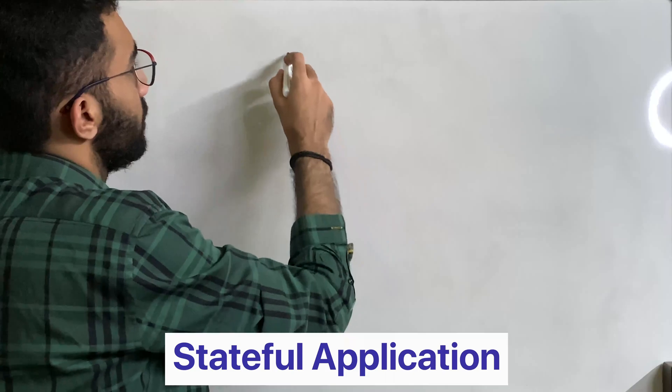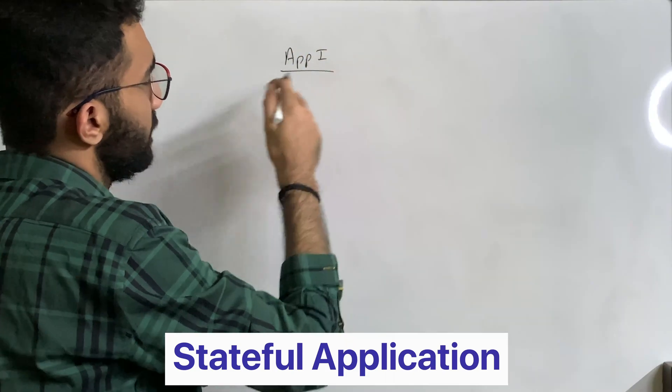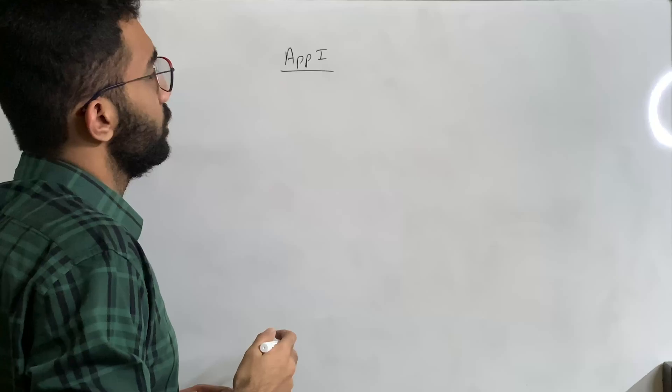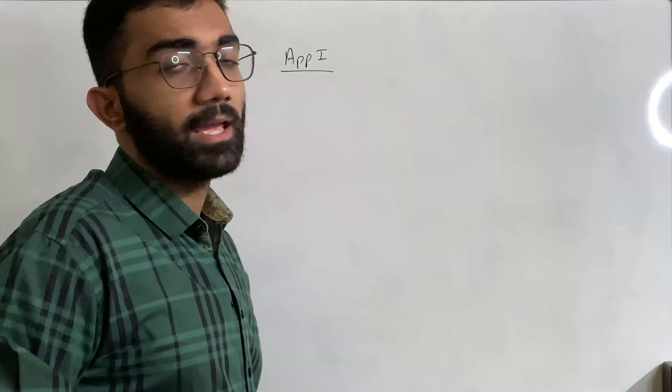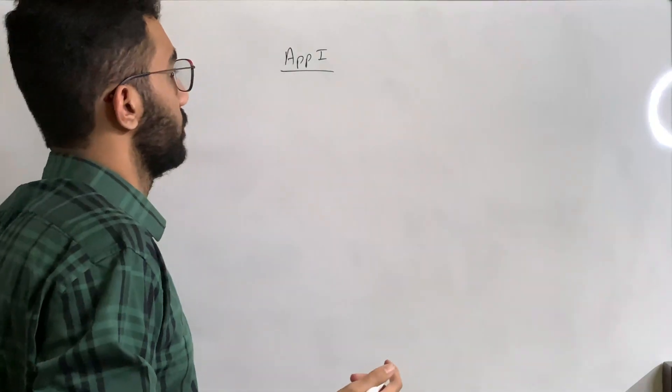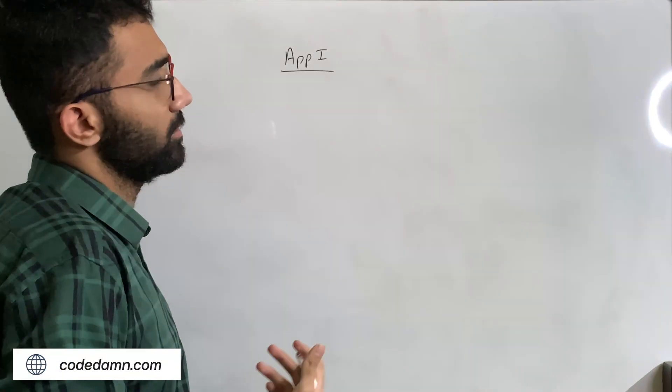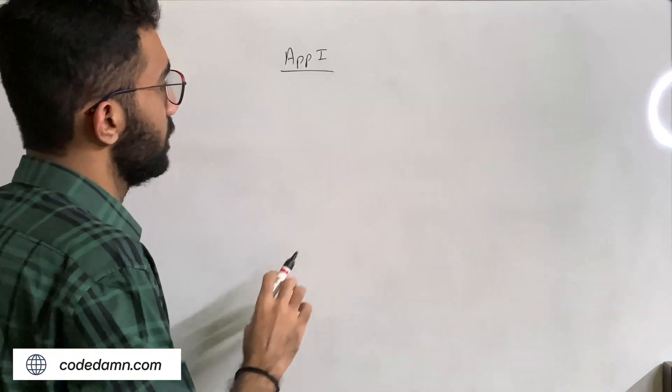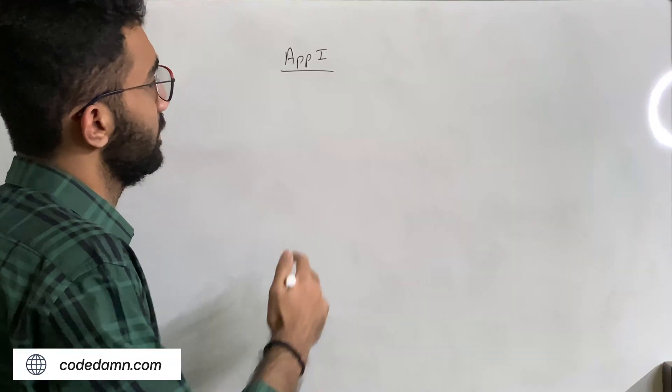Okay, so let's take example of this app one, which is going to be a stateful application. Let's say you're trying to make an API endpoint which is rate limited. This is like not an application in general itself, but just a feature which would be using state.